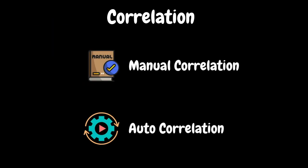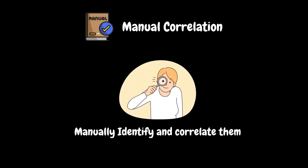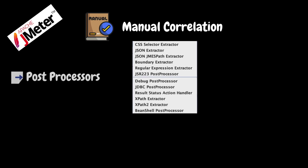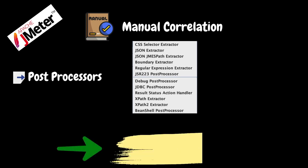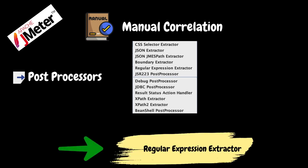Correlation can be done in two ways: manual correlation and auto correlation. Manual correlation means the performance tester will manually identify the dynamic values in the server response and correlate them in subsequent requests. In JMeter, most of the time we will be doing manual correlation using post processor elements. The most commonly used post processor element is the regular expression extractor. We also use other post processor elements like CSS selector and JSON selector based on the need.